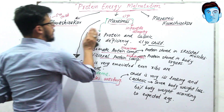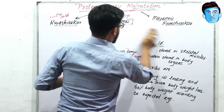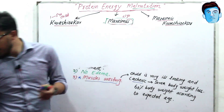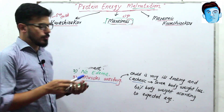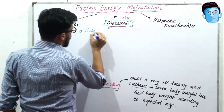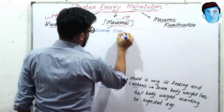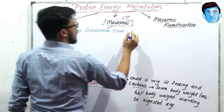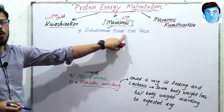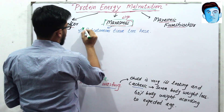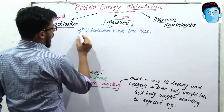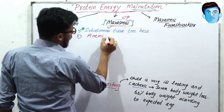Other important clinical features of Marasmus include maximum subcutaneous tissue loss, which is the most important clinical feature. There is also anemia — meaning decreased RBC count — present in Marasmus patients.